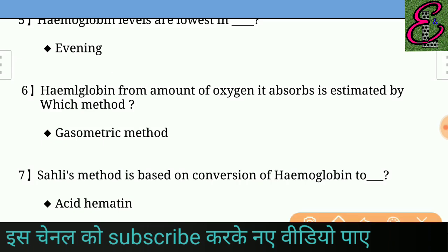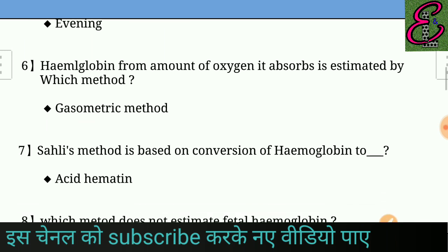Question number six: Hemoglobin, from the amount of oxygen it absorbs, is estimated by which method? The best method is oximetry. Question number seven: Sahli's method is based on conversion of hemoglobin to — answer: Sahli's method is based on conversion of hemoglobin to acid hematin.